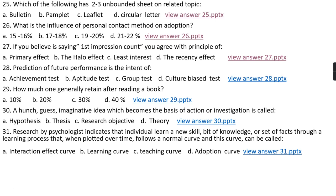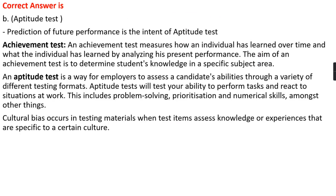Question number twenty-eight: Prediction of future performance is the intent of option A, achievement test; option B, aptitude test; option C, group test; option D, culture bias test. The right answer is option B, that is aptitude test. Prediction of future performance is the intent of an aptitude test. An achievement test measures how an individual has learned over time in a specific subject area. An aptitude test is mainly done at the office level to predict how well a selected candidate can perform after appointment, testing the ability to perform tasks and react to situations at work, including problem solving, prioritization, and numerical skills. A culture bias test occurs in testing materials that test items accessing knowledge or experience specific to a certain culture.